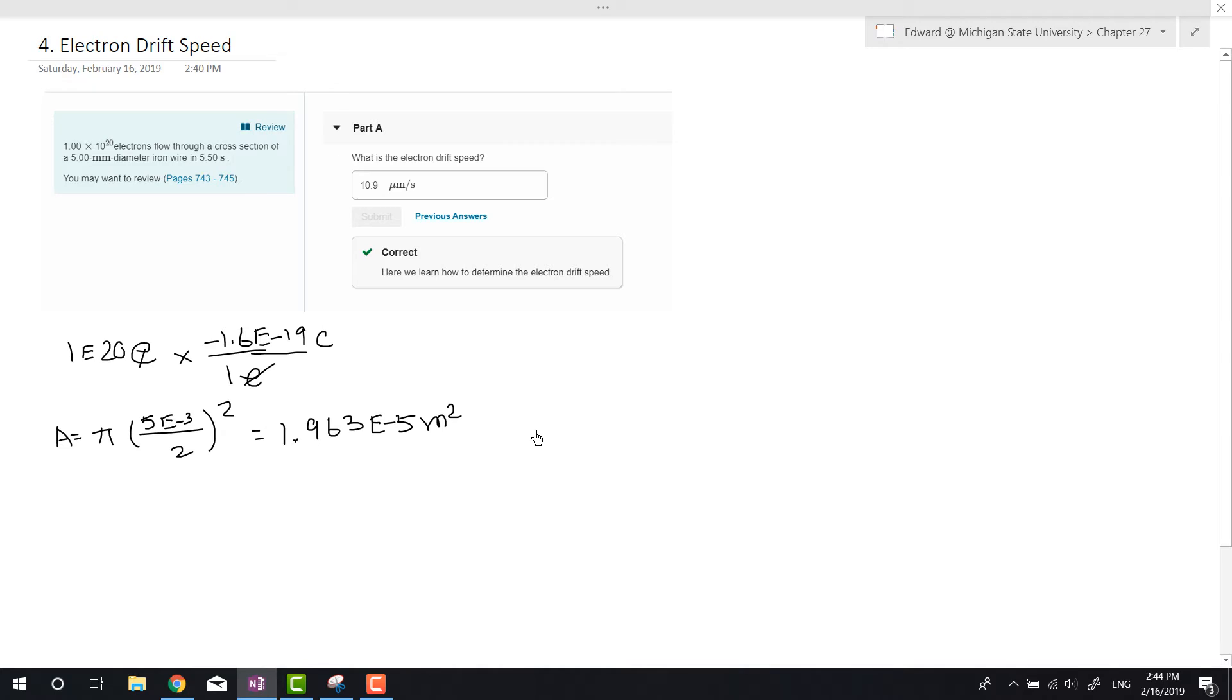And we want to know the electron drift speed. So what gives us the electron drift speed? Well, we have to figure out what makes an amp. We have time over 5.5 seconds.